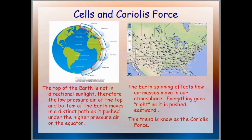This is a tangent to show how fronts interact in the world. We have the Coriolis effect: the Earth's spinning affects how air masses move in our atmosphere — everything goes right as it is pushed eastward. You can see these arrows point to the wind and they're all pushing eastward because of the Earth's spinning. This general trend is known as the Coriolis force.